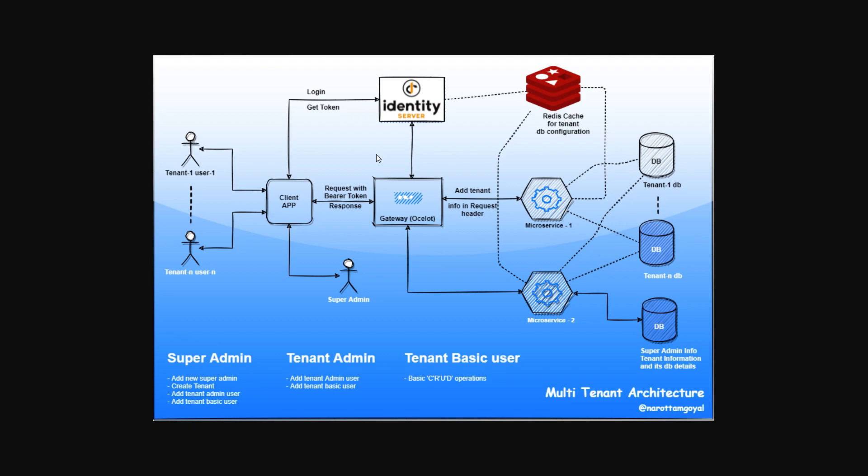That's multi-tenant at a very high level. For our project we will use Identity Server for authenticating users and Redis cache so we don't have to hit the database again and again when checking tenant information. As you can see on screen, there are multiple tenants — tenant 1, tenant 2, and so on — and their data should be saved in different databases.